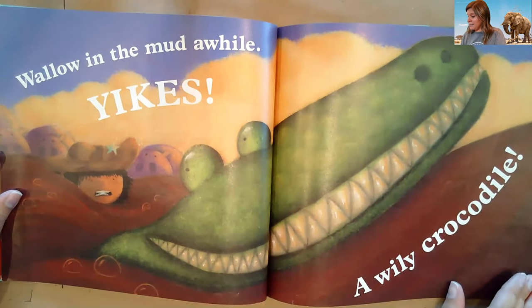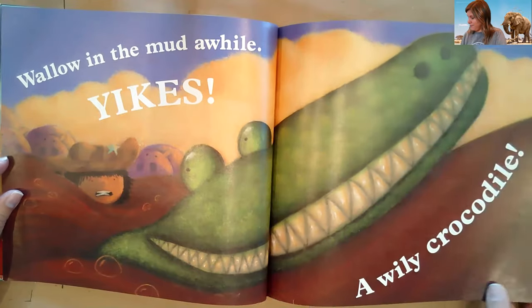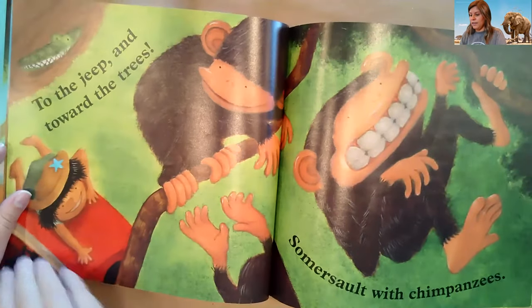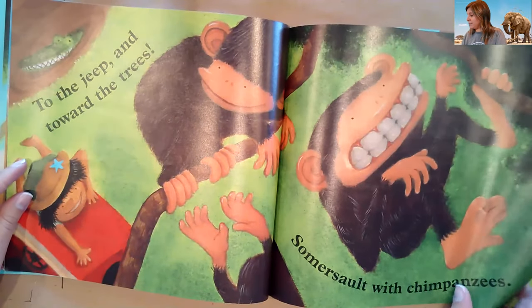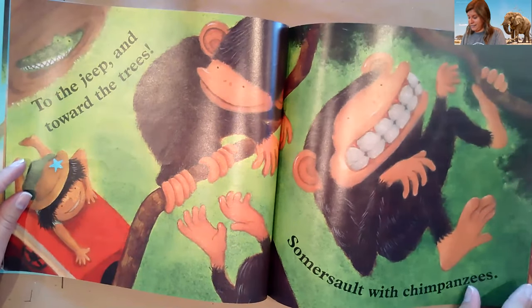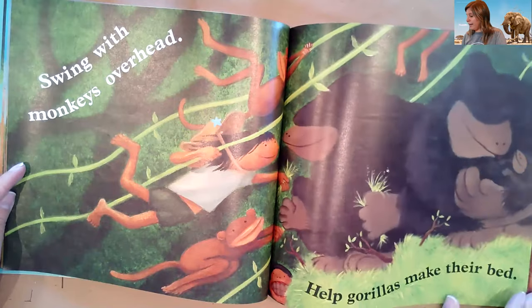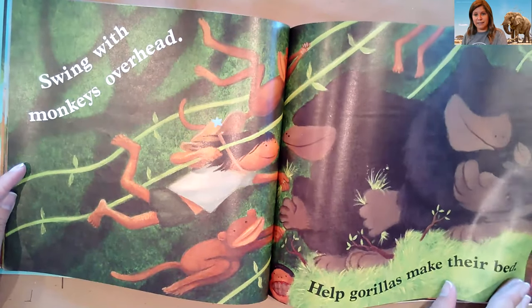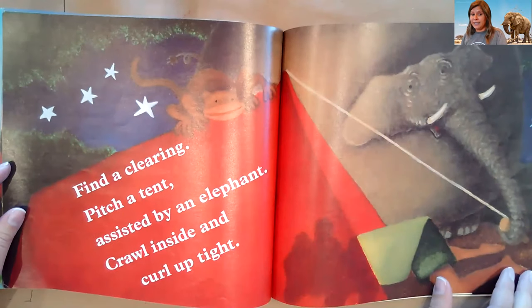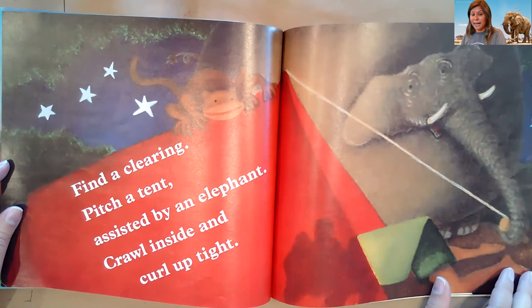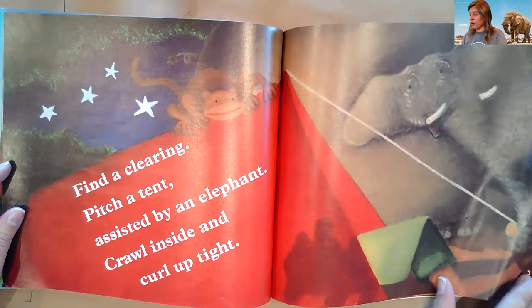Wallow in the mud a while. Yikes! A wily crocodile. To the Jeep and toward the trees, somersault with chimpanzees. Swing with monkeys overhead. Help gorillas make their bed. Find a clearing. Pitch a tent assisted by an elephant. Crawl inside and curl up tight.